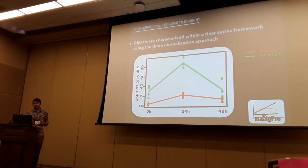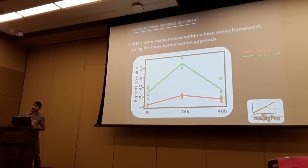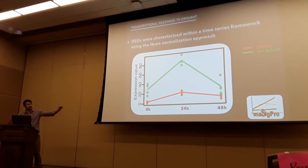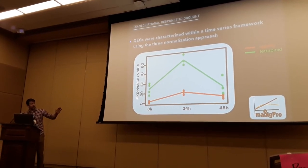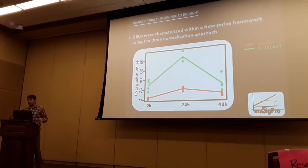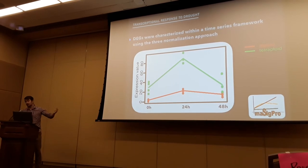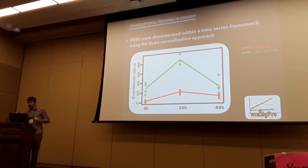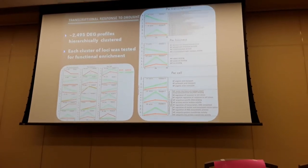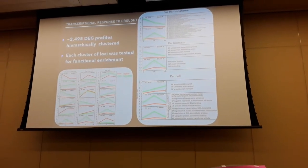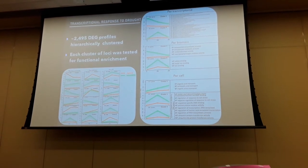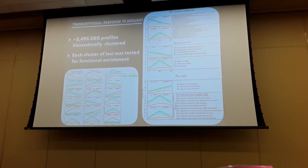We also wanted to dive into what specific genes and gene functions are doing. Because we have time series data, we can characterize differential gene expression slightly differently. A locus is called differentially drought responsive when the response directionality is similar between diploid and tetraploid, but the magnitude differs — for example, higher in the tetraploid over the first 24 hours. We characterized all 25,000 genes in the transcriptome, and about 10% — roughly 2,500 — were differentially drought responsive. We clustered these into 18 bins using hierarchical clustering, and each bin was tested for functional enrichment using gene ontology.